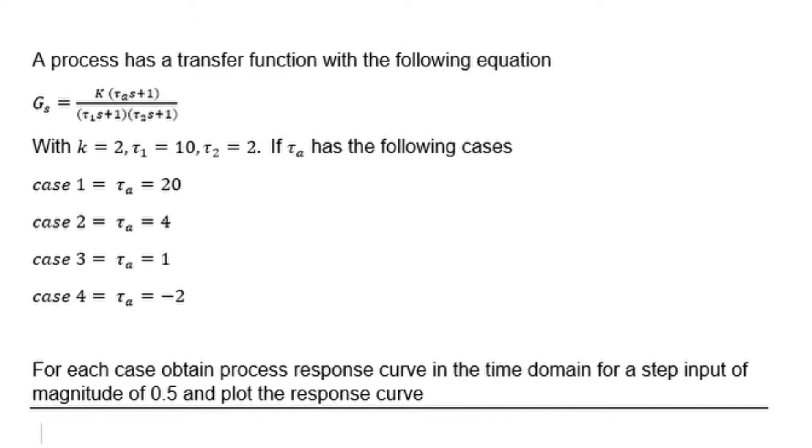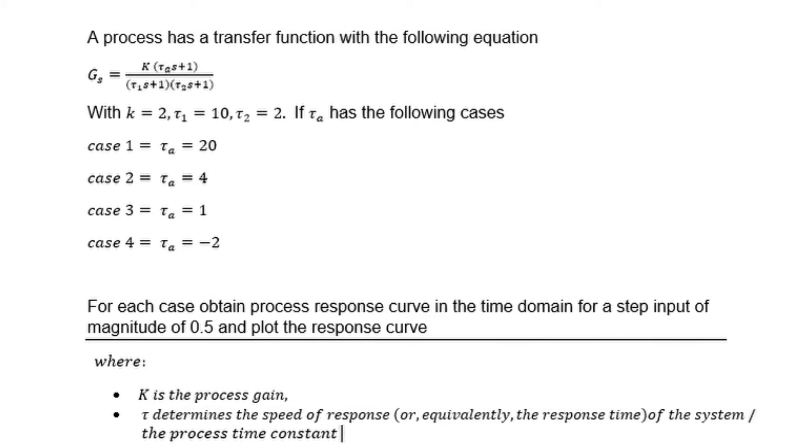K equals 2, process time constant τ1 is 10, and time constant τ2 is 2. We are also given different scenarios with different process time constants τa. For each case, obtain the process response curve in the time domain for a step input of magnitude 0.5 and plot the response curve, with K being the process gain.